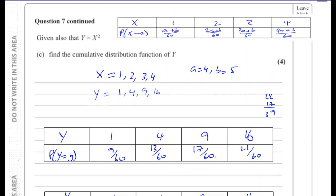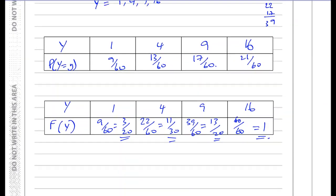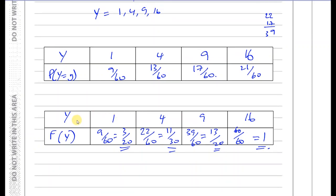Y gives you the same probabilities as x squared. When x is 1, y is 1; when x is 2, y is 4; when x is 3, y is 9; when x is 4, y is 16. But the probabilities of those occurring are the same as for x — you just replace x with what x squared is. Y equals x squared, but the probabilities of those occurring will be the same. And there we have the answer to this question.